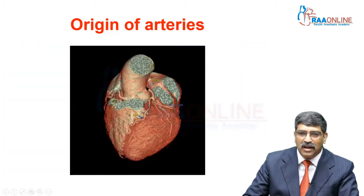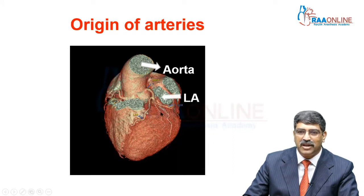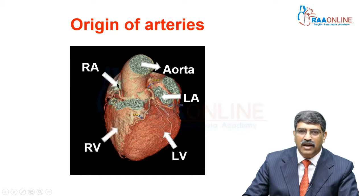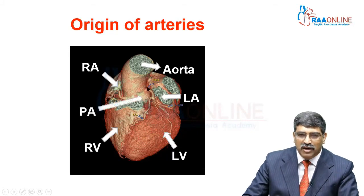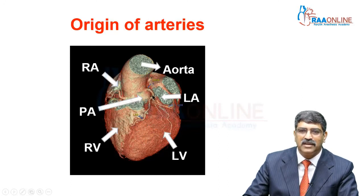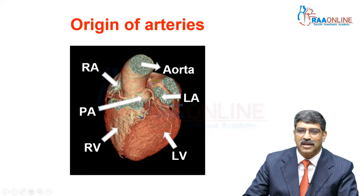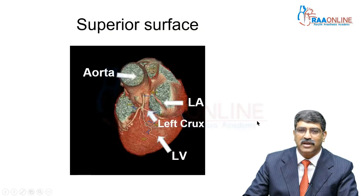You can see the left coronary artery here. This is the aorta, this is the left atrium, this is the left ventricle, this is the right ventricle, this is the right atrium, and here you have the pulmonary artery. The left main coronary artery comes from the left coronary sinus between the left atrium and the pulmonary artery, then it divides into two branches: the LAD and the circumflex. The right coronary artery comes from the right coronary sinus between the right atrium and the right ventricle.